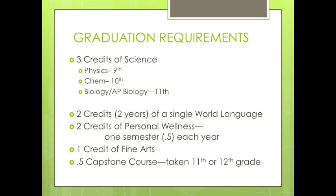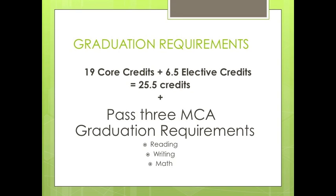2 credits of a world language, 2 credits of personal wellness — which will be a semester-long class at each grade level — 1 credit of fine arts, which can be included in music, and 0.5 credit of a capstone course, which students will take either their junior or senior year. By completing the graduation requirements in the core areas, students will earn 19 credits. The remaining credits will count as electives.